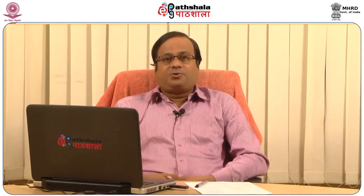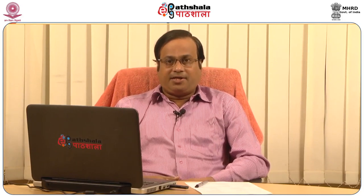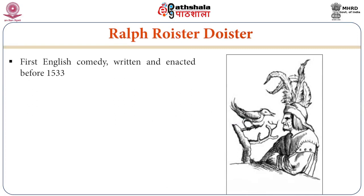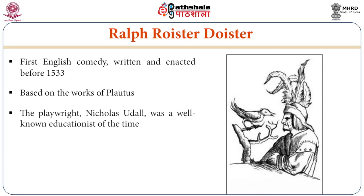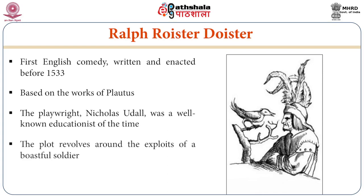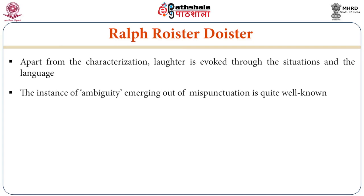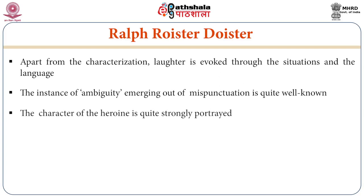Now, friends, the first comedy ever written in English is Ralph Roister Doister — written and acted before 1553 AD. Based on the work of Plautus, the playwright Nicholas Udall was a well-known educationist of the time. The plot revolves around the exploits of a boastful soldier. Apart from the characterization, laughter is evoked through the situations and the linguistic appeal of the play. The instance of ambiguity emerging out of mis-punctuation is quite well-known. The character of the heroine is quite strongly portrayed in the text.